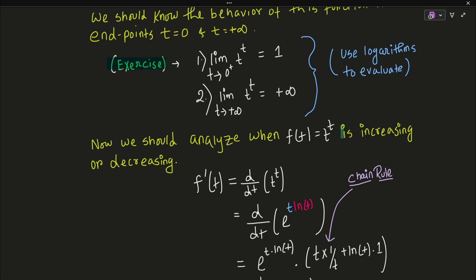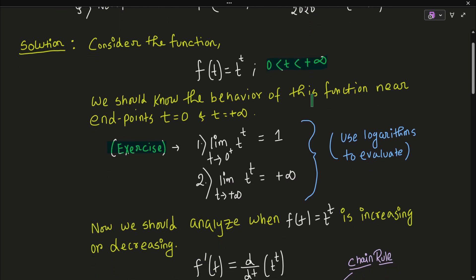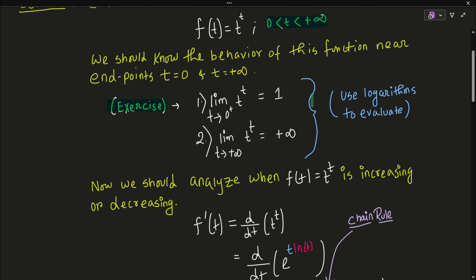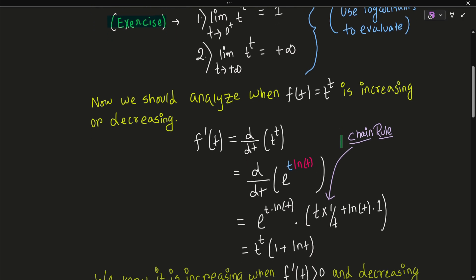We now analyze the monotonicity of f(t) — whether it is increasing or decreasing and on which intervals. Knowing this is important because, since we know the endpoint values and that 2019/2020 ≈ 0.95, we can determine whether that value lies within the range of the function. If it does and the function is monotonic there, the equation has exactly one solution in that interval.